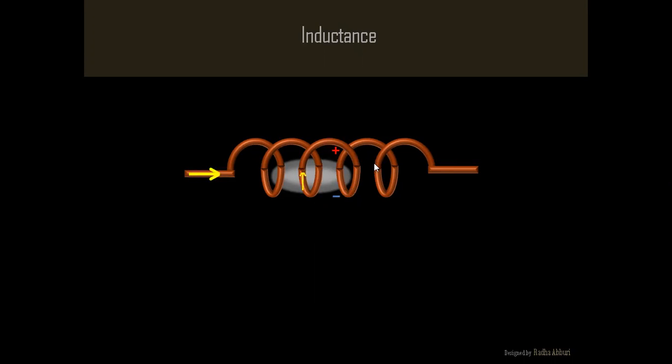Due to this potential difference, current flows from positive to negative so as to oppose the main current. Now, two currents cannot flow in a single wire.